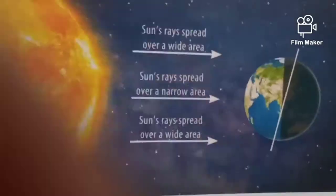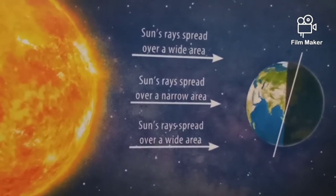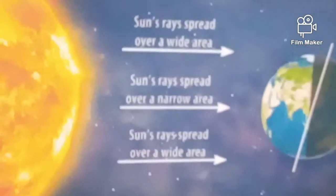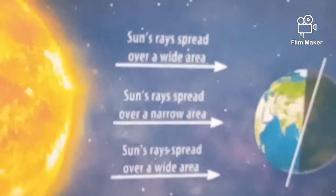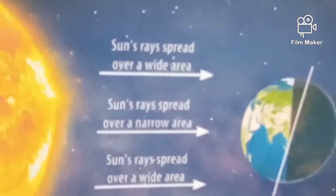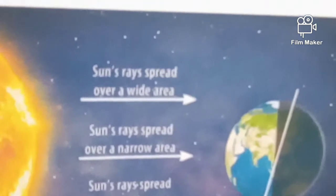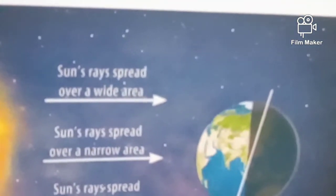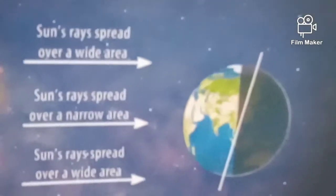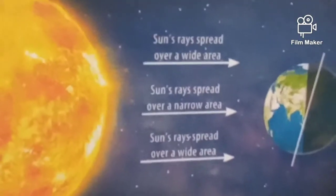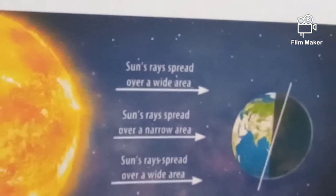Temperature changes between day and night and between different seasons. When we say summers are hotter than winters, we mean that the temperature during summer is higher than in winter. An important factor in the temperature of a place is insolation, which is the amount of solar energy received by the surface of the earth in a given time. The amount of solar radiation received by a region closer to the poles is less.